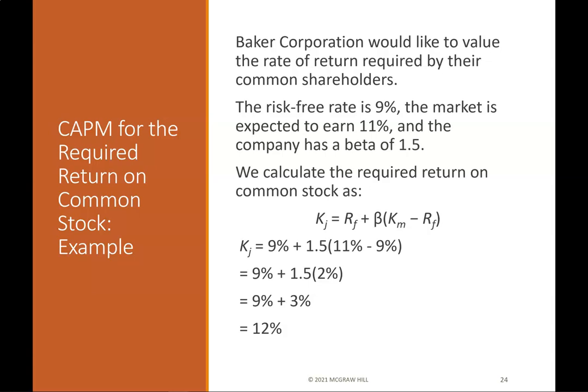CAPM example: Baker Corporation would like to value the rate of return required by their common shareholders. The risk-free rate is 9%, the market is expected to earn 11%, and the company has a beta of 1.5. We calculate the required return on common stock as KJ = RF + β × (KM − RF) = 12%.